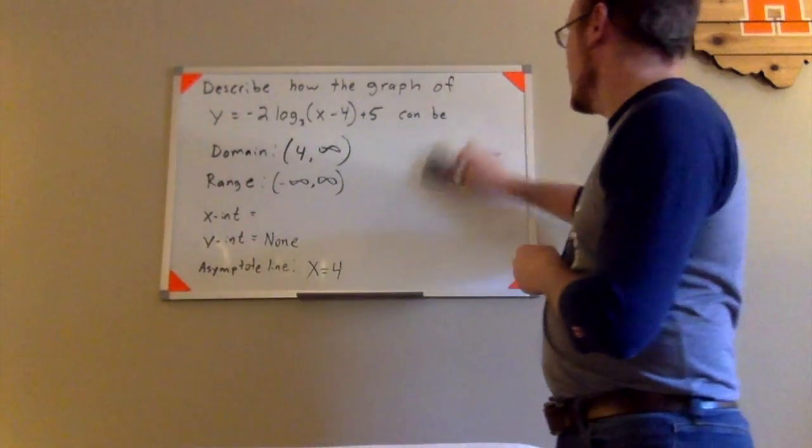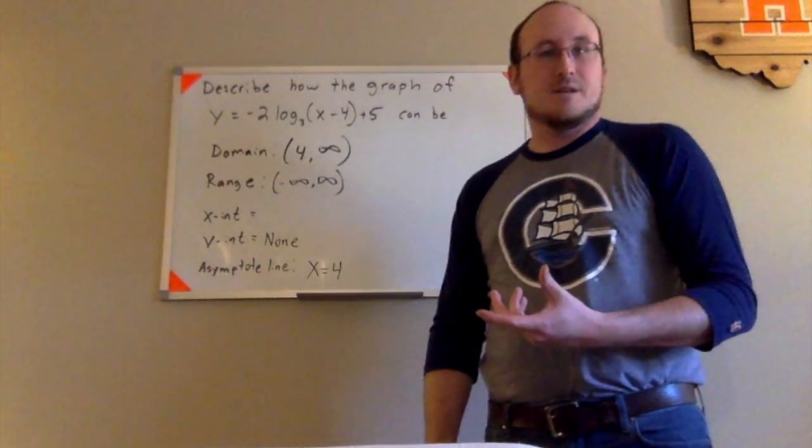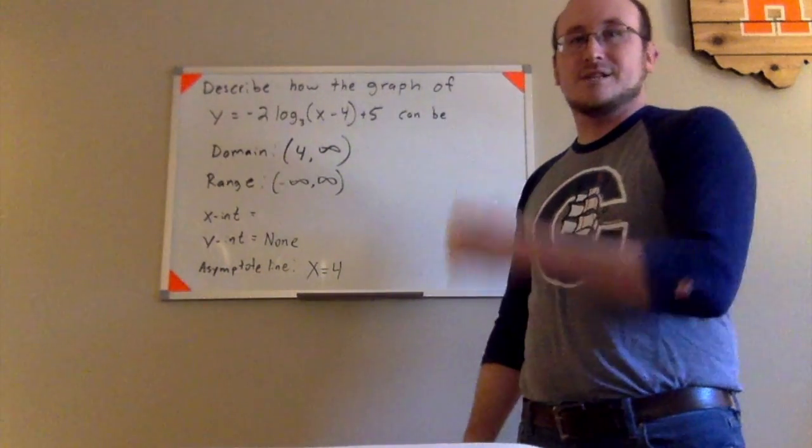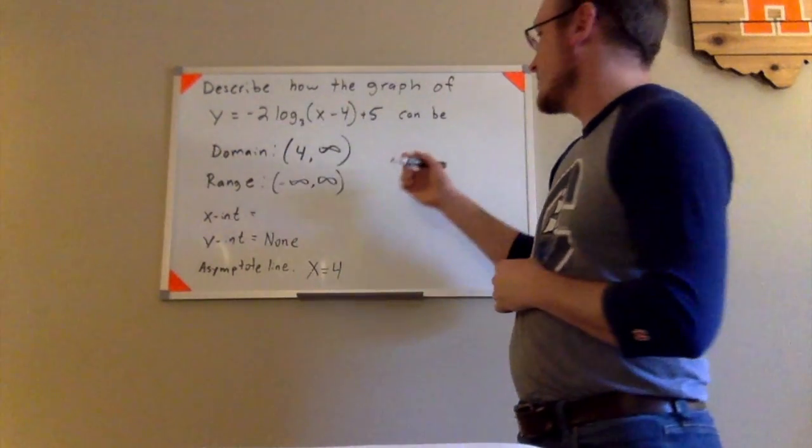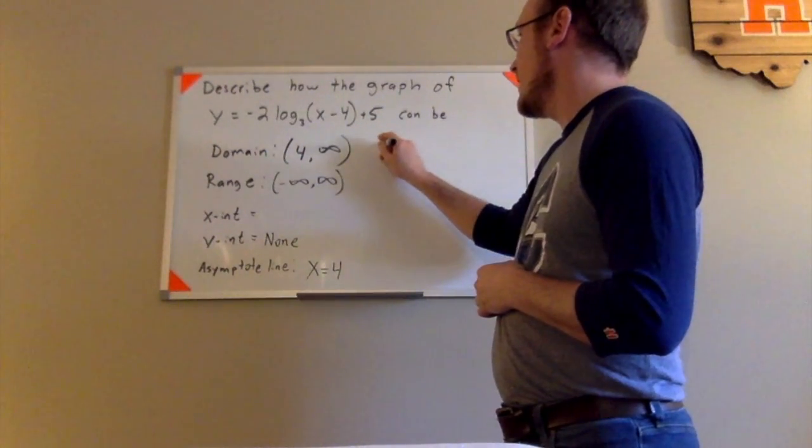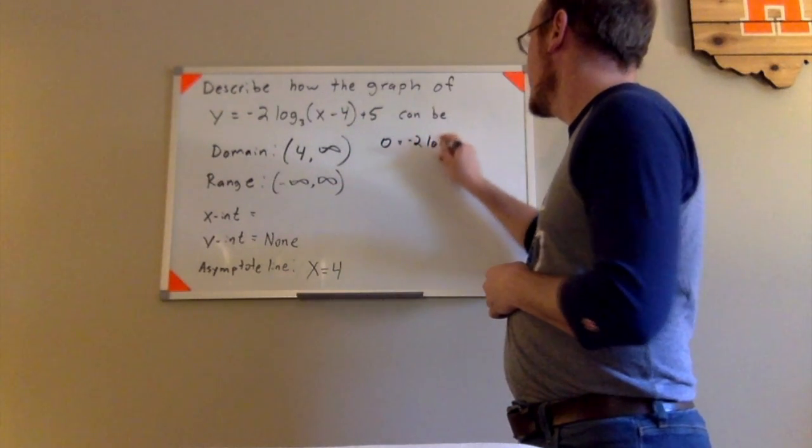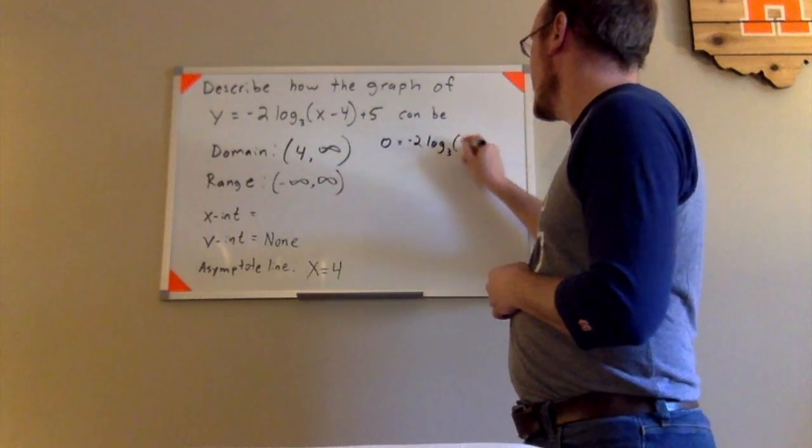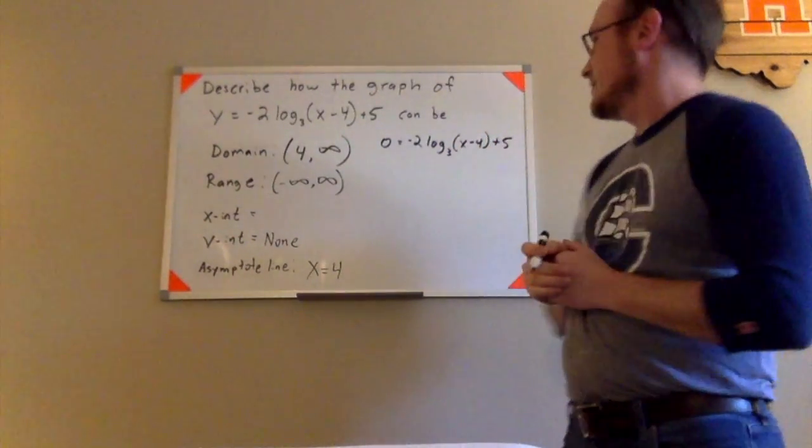So that's going to take a little bit more work to find the x-intercept here. Again, thinking back to what we talked about with other functions, to find the x-intercept, you will plug 0 in for y. So I'm just going to take this function here and I'm going to plug 0 in for y. That's 0 equals negative 2 log base 3 of x minus 4 plus 5, like that.